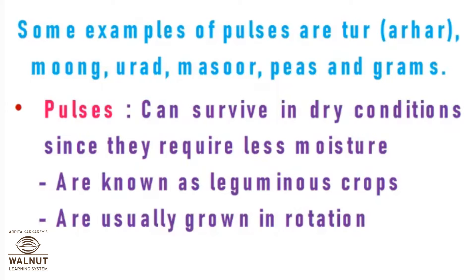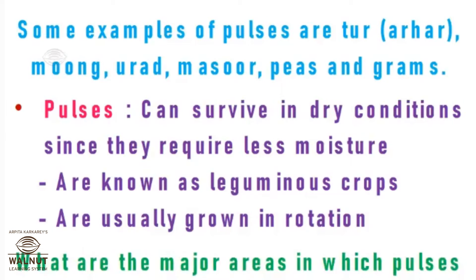Because the roots have nodules that can fix nitrogen from the soil, they are called leguminous crops. Pulses are usually grown in rotation with other crops. What are the major areas in which pulses are grown? List the states.